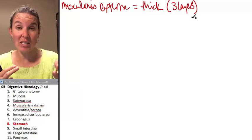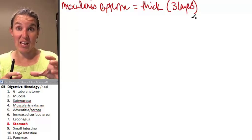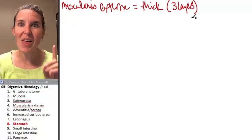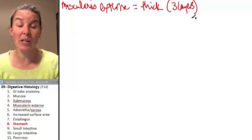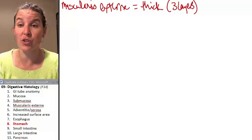And not only does it have three layers, it has thick layers. So that's the first thing. If you can see your three layers of muscularis externa, you're stoked.